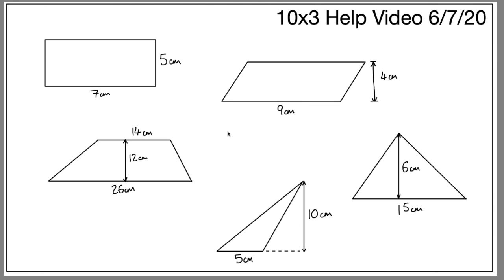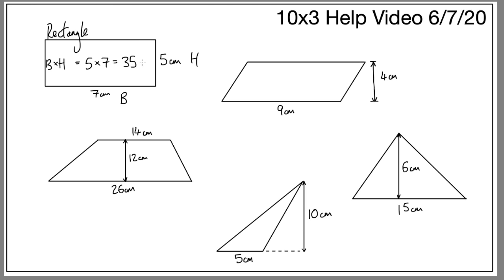Hi Year 10, just some help for this week's work. What I've got here on the screen is five shapes and we want to find the area of each one. Starting up here we have a rectangle, and to find the area we need to do base times height. So we just do the base times the height of the shape, and that gives me five times seven which is 35 centimeters squared.